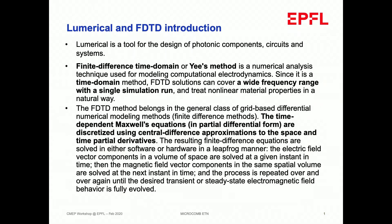The FDTD method belongs to the general class of grid-based differential numerical modeling methods, which is also a class of finite difference methods. The time-dependent Maxwell equations in partial differential form are discretized using central difference approximation to space and time derivatives. Basically, you solve the problem first in the spatial domain, then time moves one step further, and this iteration repeats as time evolves. The result finite difference equations are solved in a leapfrog manner — electric field vector components are solved at a given time instant, then magnetic field components in the same spatial volume are solved at the next instant, repeated until the desired transient or steady-state electromagnetic field behavior is fully evolved.